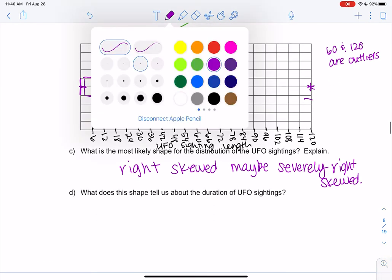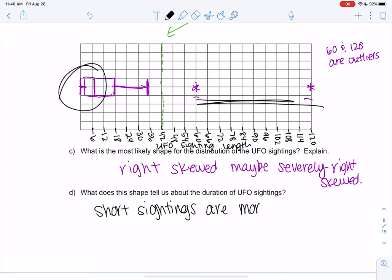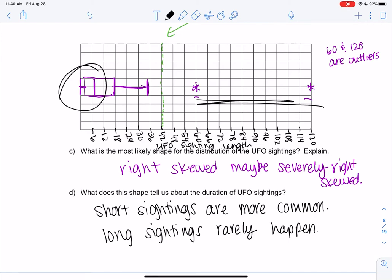And then what does the shape tell us? Just like everyday life, what does this mean? Right skewed is kind of confusing in everyday language. So right skewed in everyday life tells us that most of the sightings are really short and long sightings are less likely. So short sightings are common or more common. And then long sightings rarely happen. They happen, but not often.